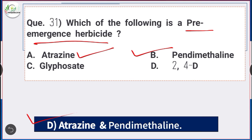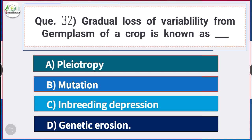Question number 32: Gradual loss of variability from germplasm of a crop is known as — answer option D — genetic erosion. The gradual loss of variability from germplasm of a crop is known as genetic erosion.